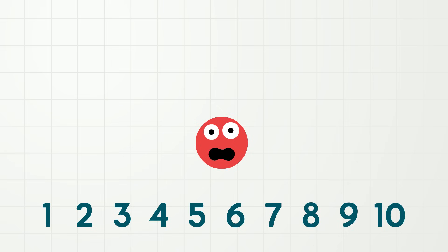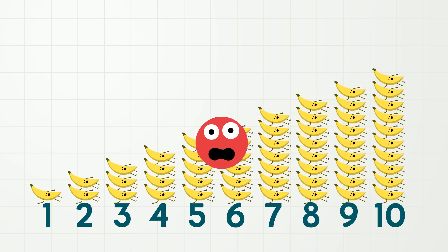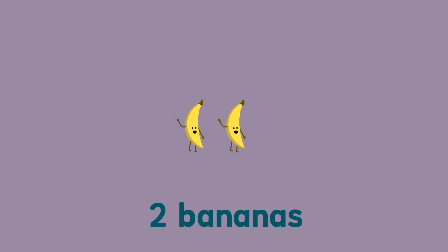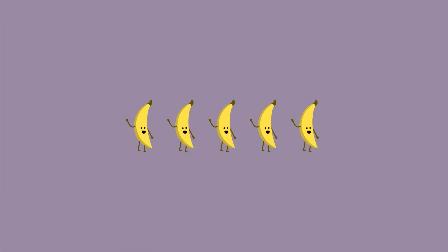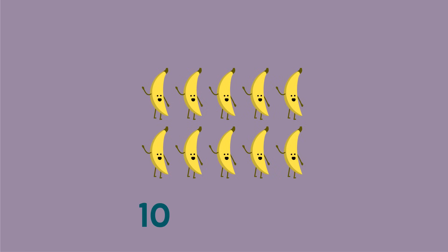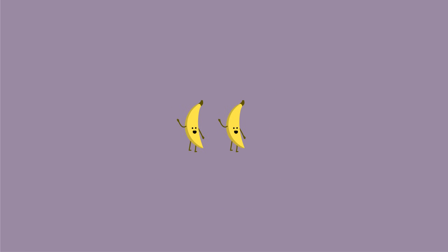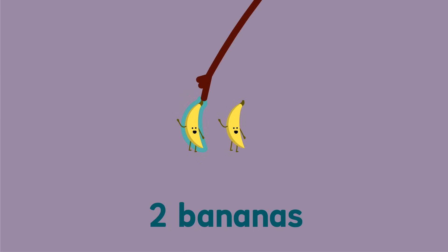Good job! So, these are all the numbers, or numerals, from 1 to 10. And did you know that we can also show numbers using bananas? Oh, yes we can! For example, this is what 2 bananas look like. This is what 2 bananas look like. 1, 2.